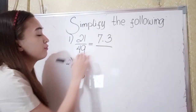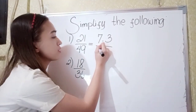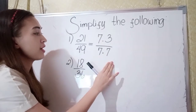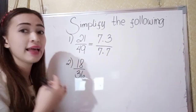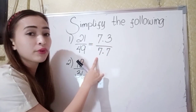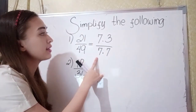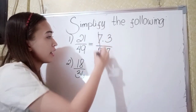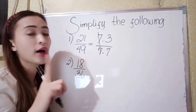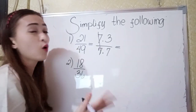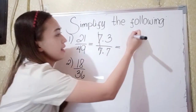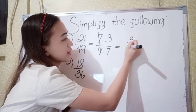What are the factors of 49? So 7 times 7. 7 times 7 is equal to 49. Then simplify. Since 7 has the same number here at the denominator, so they are cancelled, because 7 divided by 7 is 1. So the simplified form of 21 over 49 is 3 over 7.